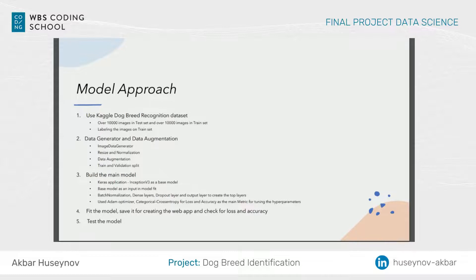The next step was creating a data generator for data augmentation, which increases the amount of data by adding slightly modified copies of already existing ones, resizing and normalizing the inputted images. Later in this step I split the train set into train and validation paths to check the model performance after fitting.